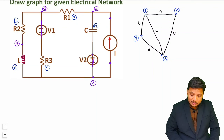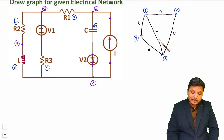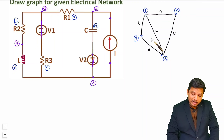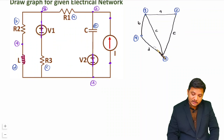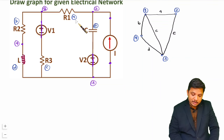This is a simple graph, not a directed graph. In a directed graph, we show the direction of current or voltage, but here I am not showing direction. The basic process is: short circuit voltage sources, open circuit current sources, identify all elements as branches, provide nodes, and connect the graph accordingly.